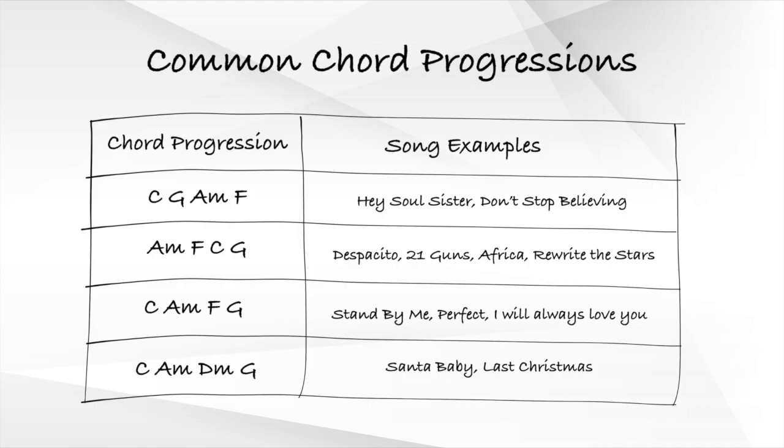With this in mind, here are some common chord progressions used by many songs worldwide. The two most common ones being the C-G-Am-F progression and the Am-F-C-G progression. For each progression, I've listed a bunch of examples in the description down below, so do definitely check those songs out. In order to familiarize yourself with these progressions, do experiment and improvise with them, and progressively add them to your repertoire if you haven't already.